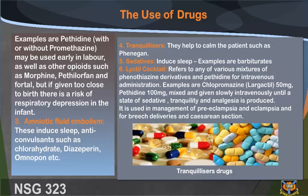6. Lytic cocktail: refers to any of various mixtures of phenothiazine derivatives and pethidine for intravenous administration. Examples are chlorpromazine (Largactil) 50 mg and pethidine 100 mg, mixed and given slowly intravenously until a state of sedation, tranquility, and analgesia is produced. It is used in management of pre-eclampsia and eclampsia, and for breech deliveries and caesarean section.